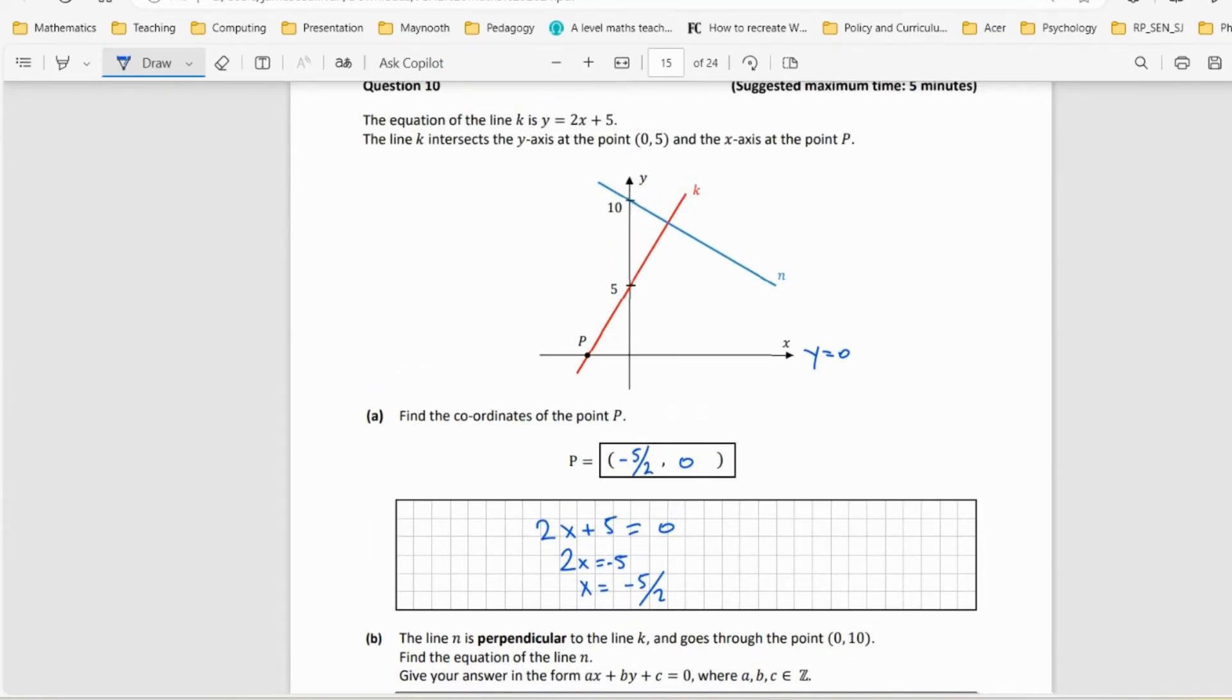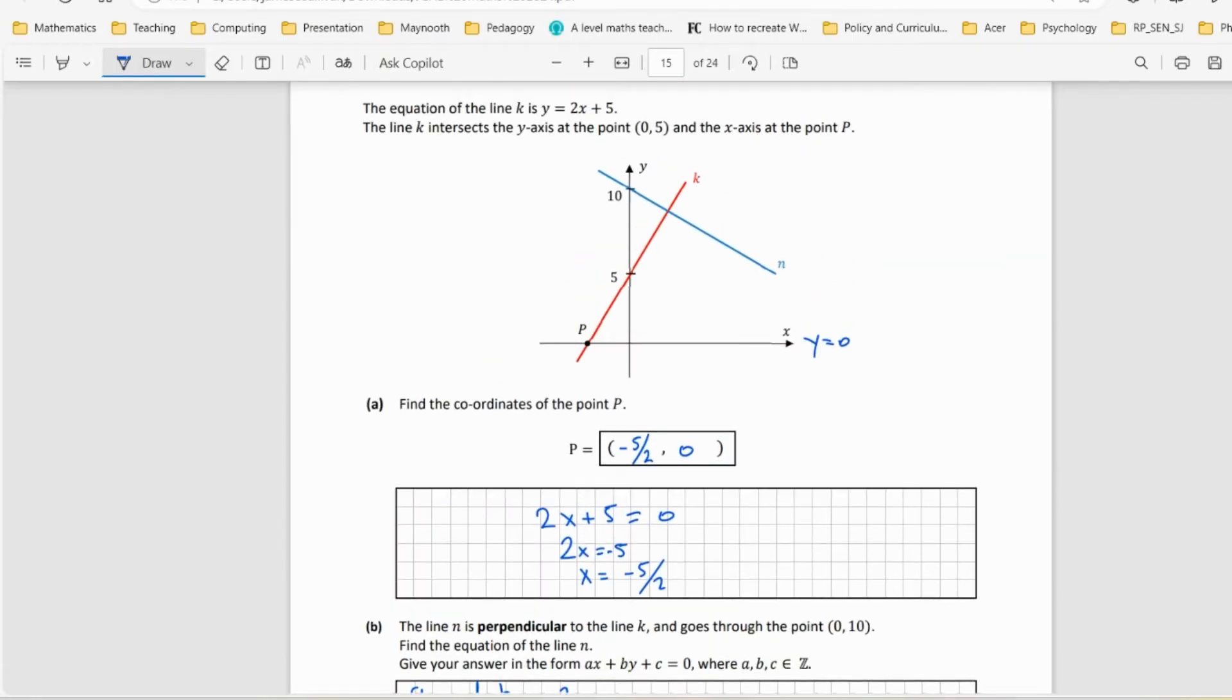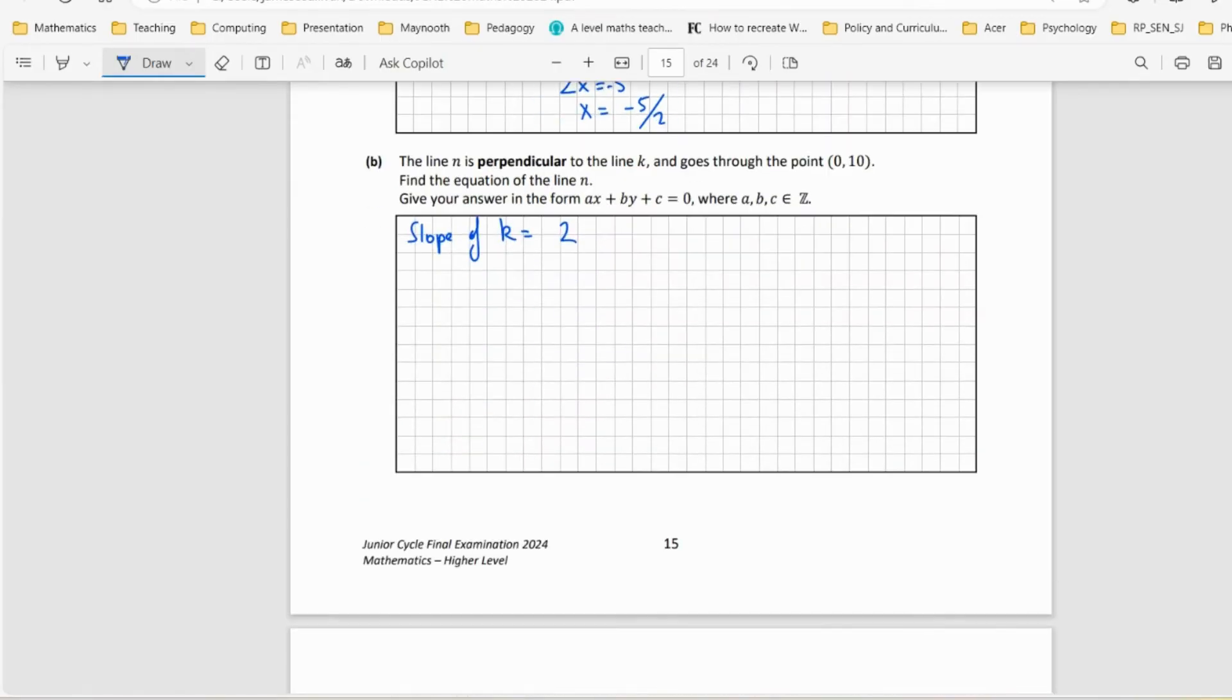The slope of k is 2 because the equation is y = 2x + 5, so this is the slope here. If the slope of k is 2, therefore the slope of n is perpendicular to that, which means it's -1/2.